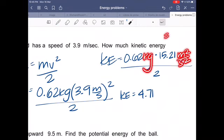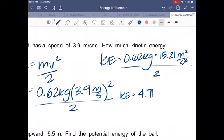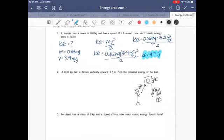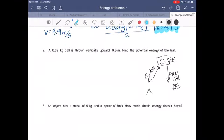And here's your answer for kinetic energy. Now let's do one of potential energy. Please don't mind my drawing there. So we have a 0.38 kilogram ball is thrown vertically upward 9.5 meters. Find the potential energy of the ball.